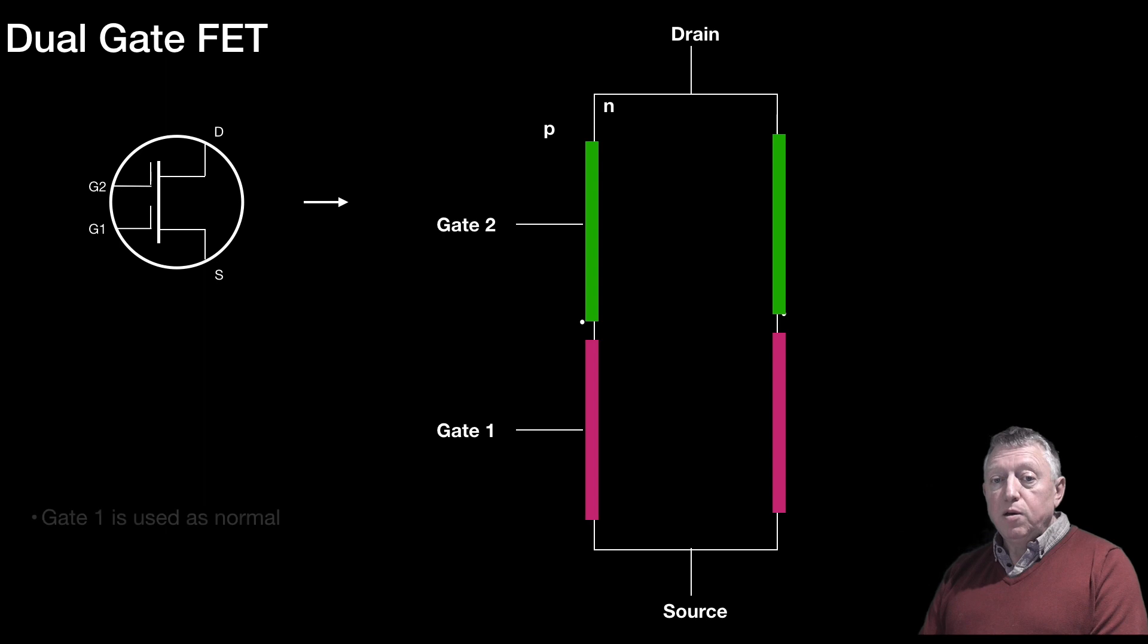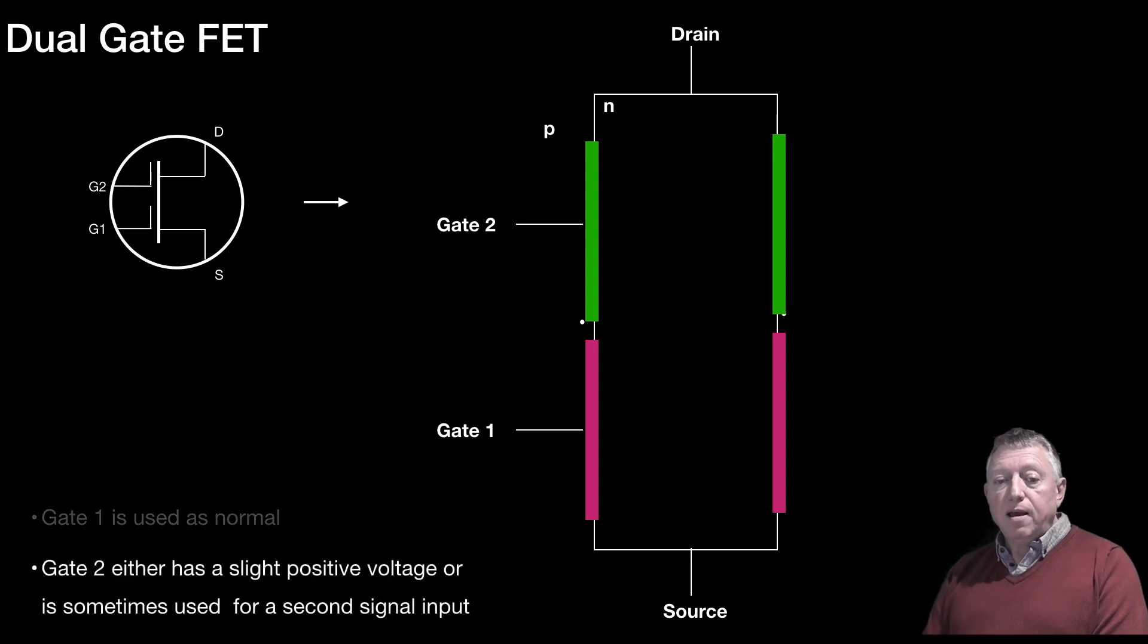Gate 1 is normally used as normal. And Gate 2 is either slightly positive, has a slightly positive voltage, or is sometimes used for a second signal input. And if you have had a look at the, I think it is Receivers D, where we look at the mixer, the structure of a mixer, one of the options there is to use a dual-gate FET for mixing.